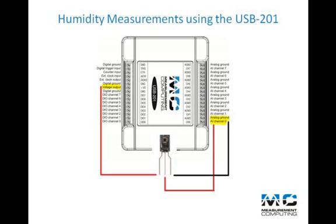Then the VC-minus or ground from the HIH-4000 sensor to the analog ground pin of the USB-201. And last, the output lead from the sensor to the channel zero pin of the USB-201.